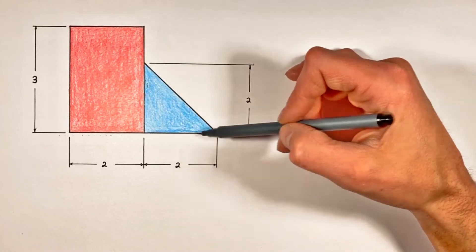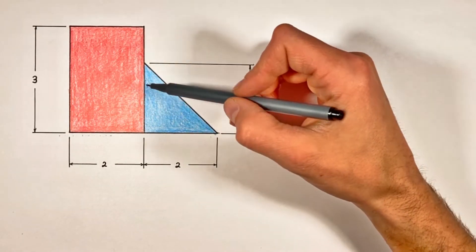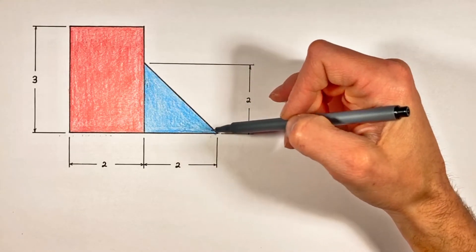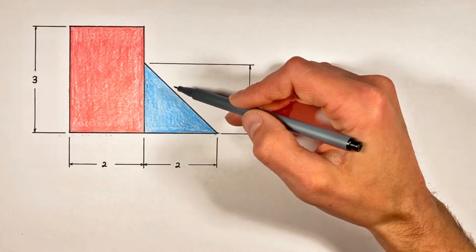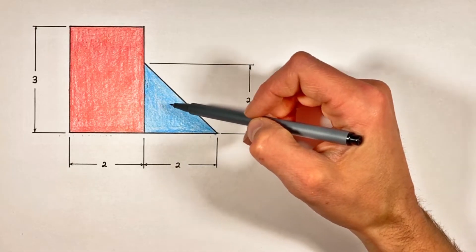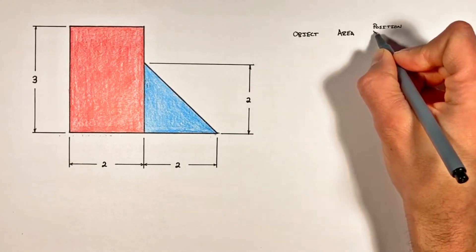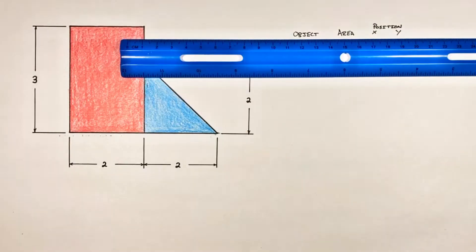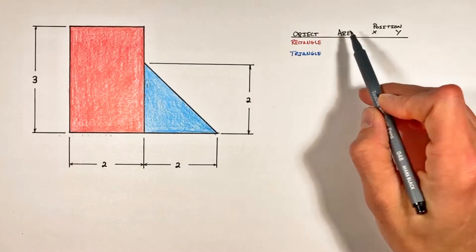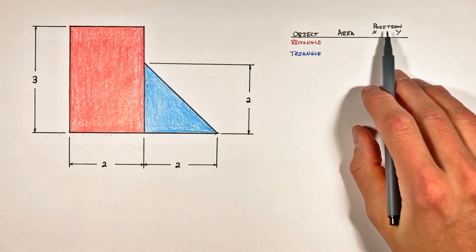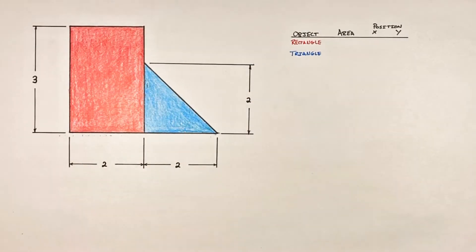In this problem we're only dealing with two different objects, but anytime I'm doing a center of mass or centroid problem I like to set up a table just to keep all the information organized. We're going to work out the area, horizontal position, and vertical position for each of these objects.